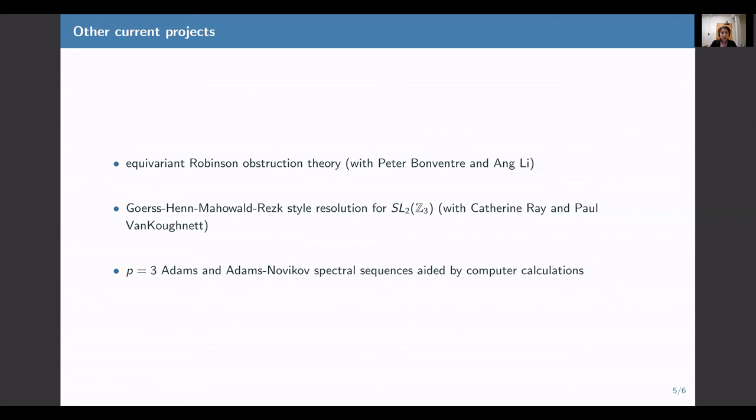I've also been working on computing the classical Adams and Adams-Novikov spectral sequences at the prime 3, using some new developments since the much earlier previous attempts. In particular, I'm making use of computer calculations, using code by Guozhen Wang and Christian Nassau, to calculate the purely algebraic parts of these computations. I'm also interested in making use of K(2)-local information.